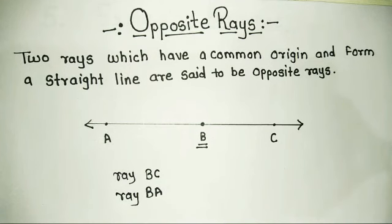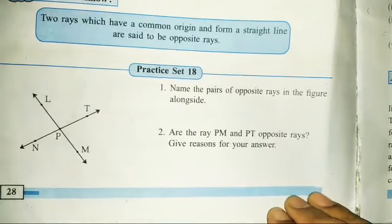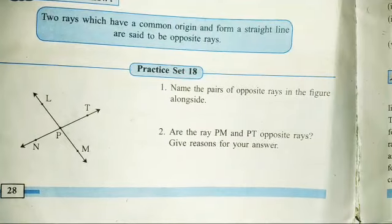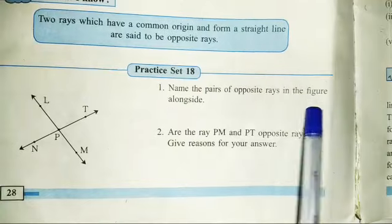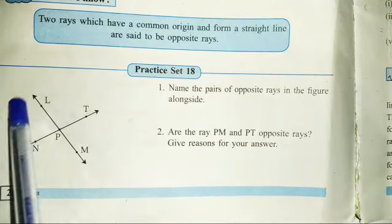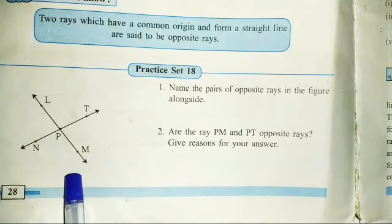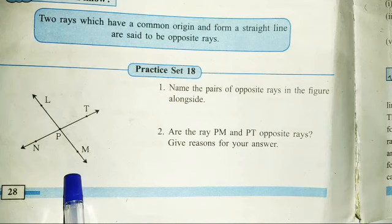Now we will solve Practice Set 18 based on this concept. In Practice Set 18, the first question asks us to name the pair of opposite rays in the figure alongside. In this figure we need to find the pair of opposite rays.